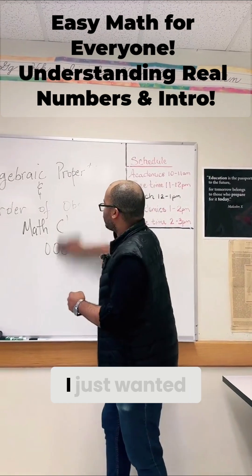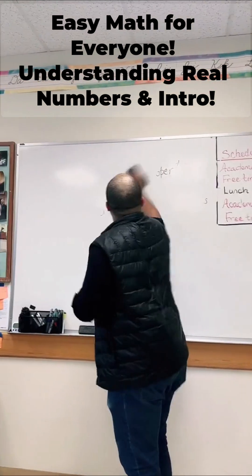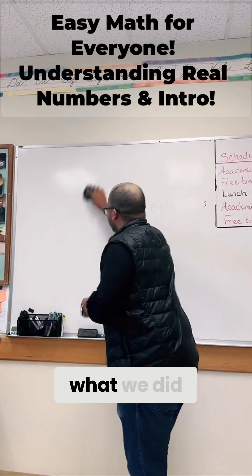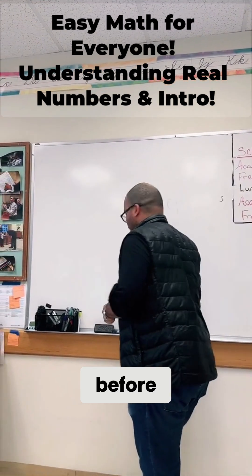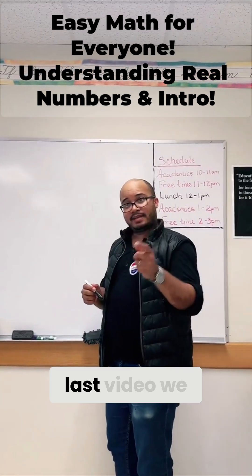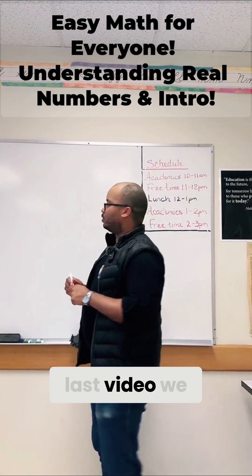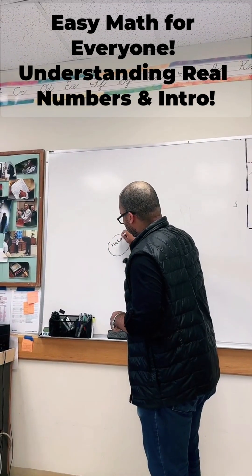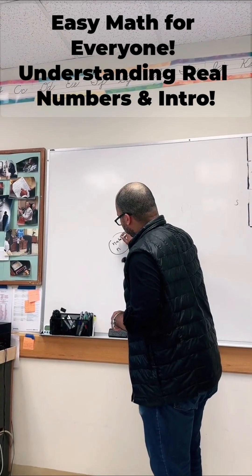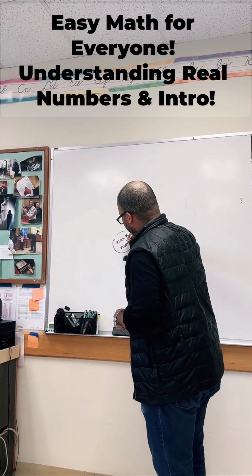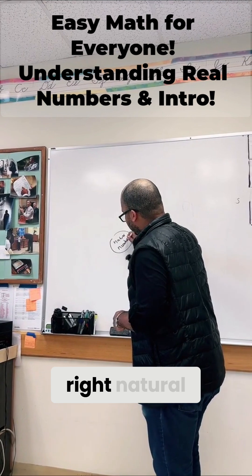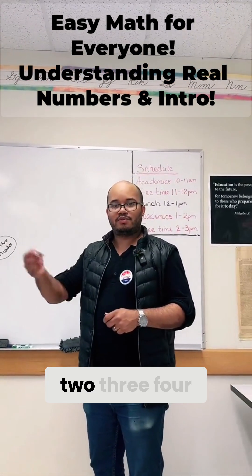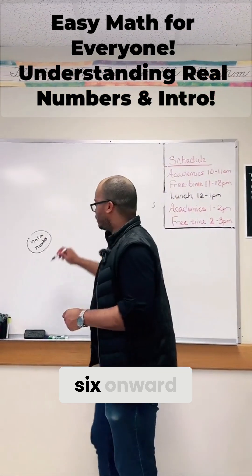I just wanted to go over briefly what we did before. Last video, we talked about natural numbers. Natural numbers were 1, 2, 3, 4, 5, 6, and onward.